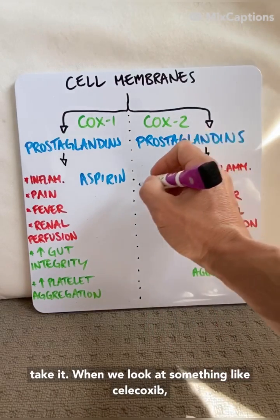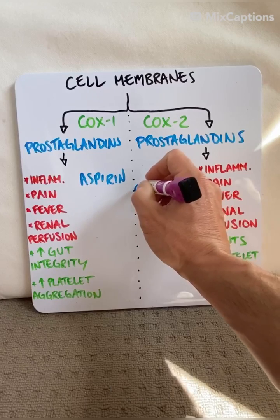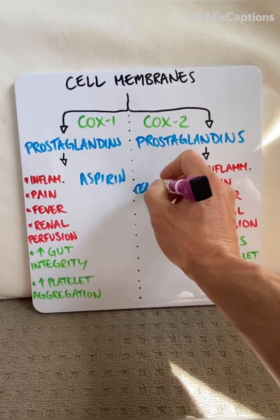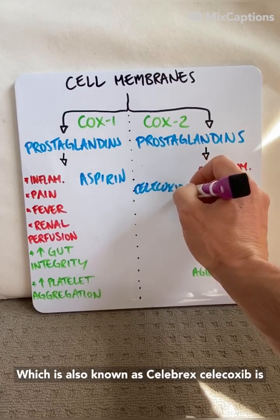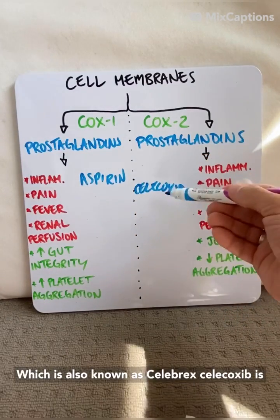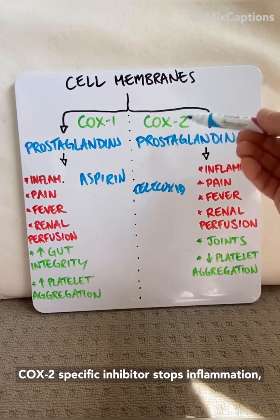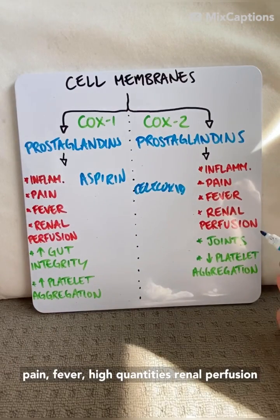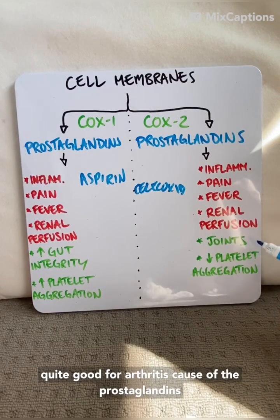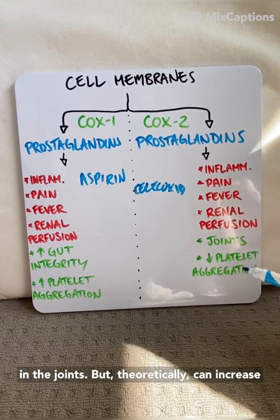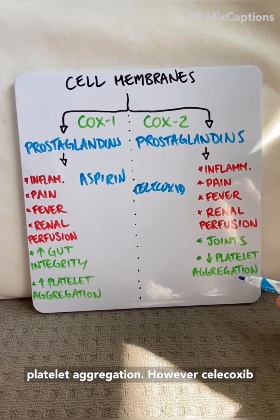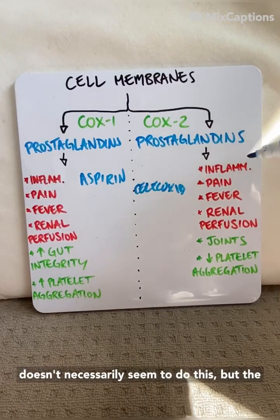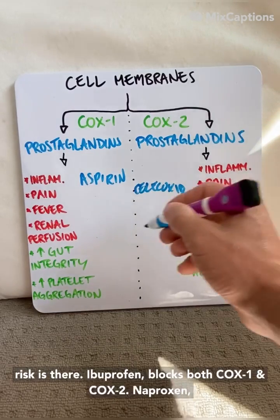When we look at something like celecoxib, which is also known as Celebrex, celecoxib is a COX-2 specific inhibitor — stops inflammation, pain, fever, renal perfusion — quite good for arthritis because of the prostaglandins in the joints, but theoretically can increase platelet aggregation. However, celecoxib doesn't necessarily seem to do this, but the risk is there.